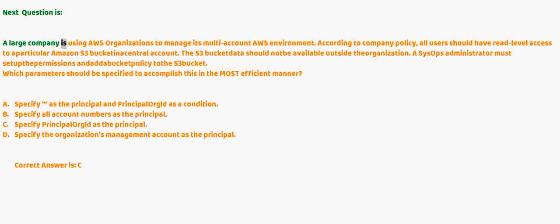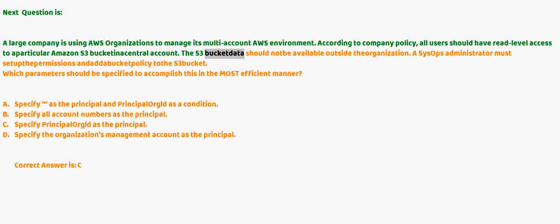Next question: A large company is using AWS Organizations to manage its multi-account AWS environment. According to company policy, all users should have read-level access to a particular Amazon S3 bucket in a central account. The S3 bucket data should not be available outside the organization. A SysOps administrator must set up the permissions and bucket policy for the S3 bucket.